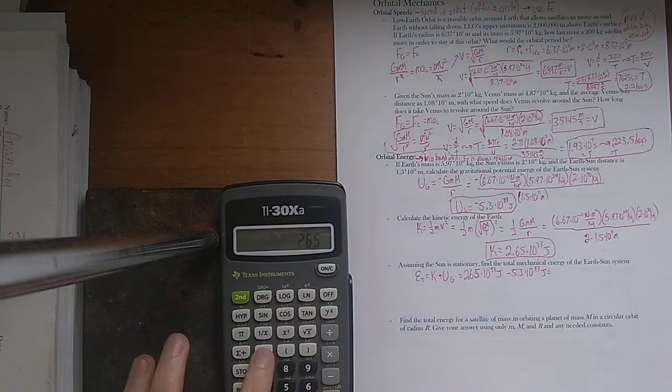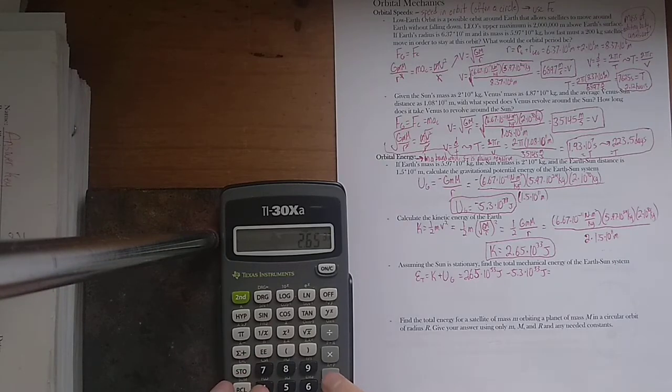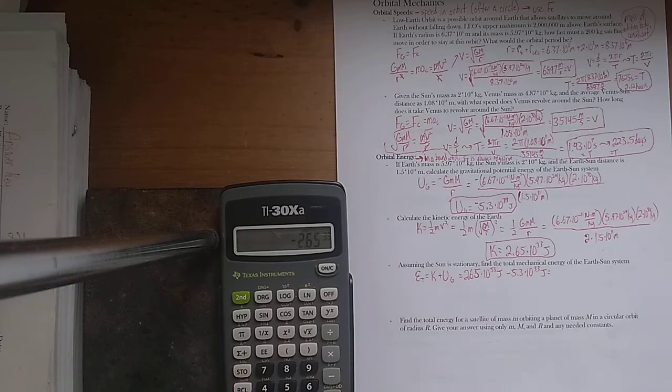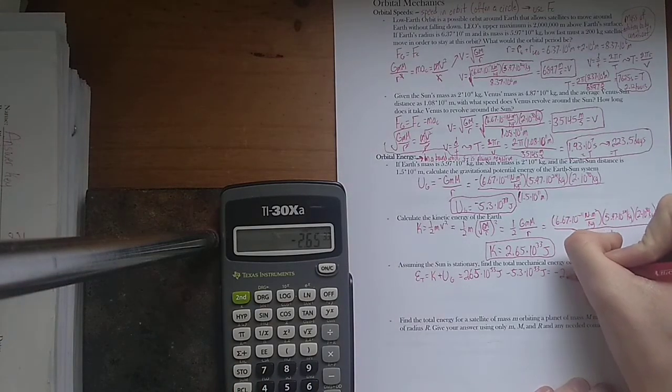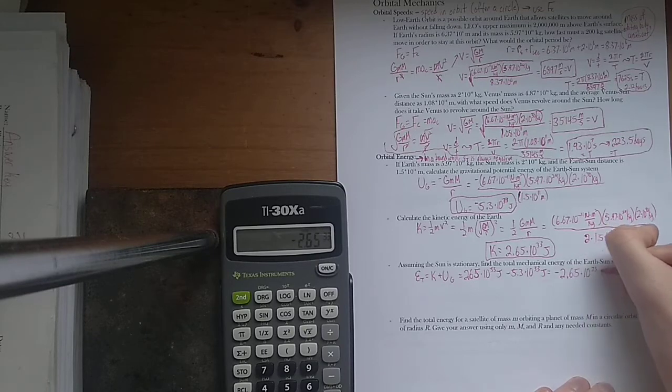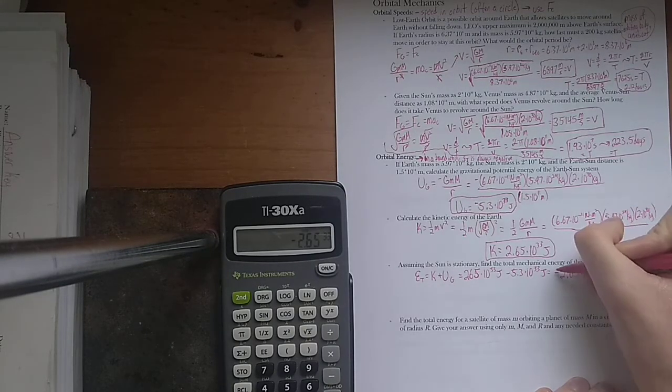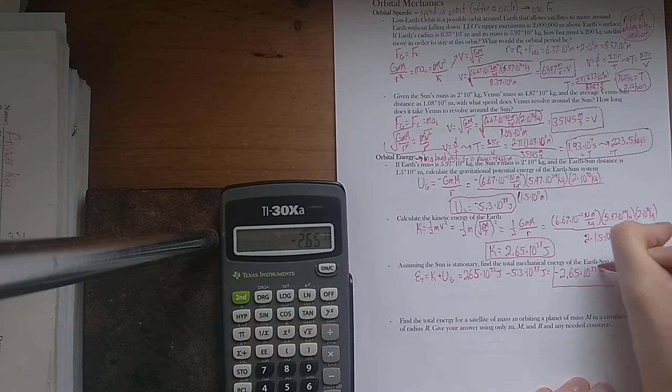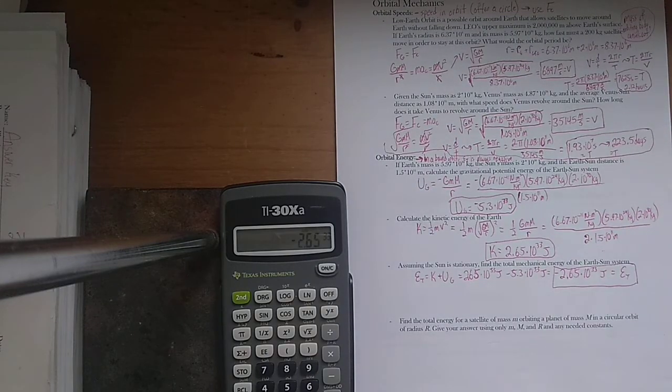So, 2.65 times 10 to the 33rd, minus 5.3 times 10 to the 33rd. That's not a mistake. The total energy ends up being negative 2.65 times 10 to the 33rd joules. In other words, it's just the negative of the kinetic energy, or exactly one-half of the gravitational potential energy. So, that's really weird that it worked out like that.